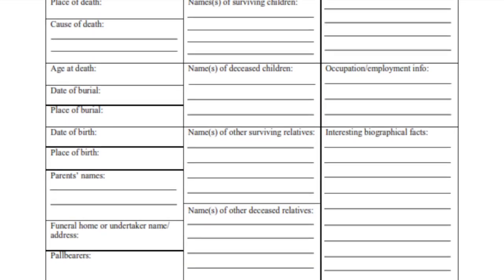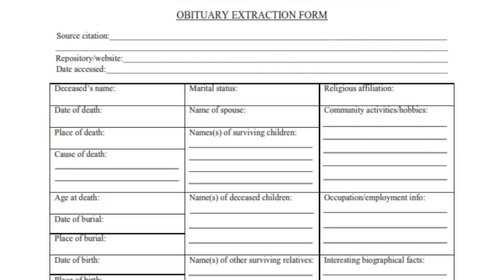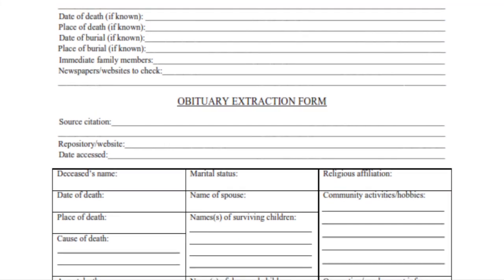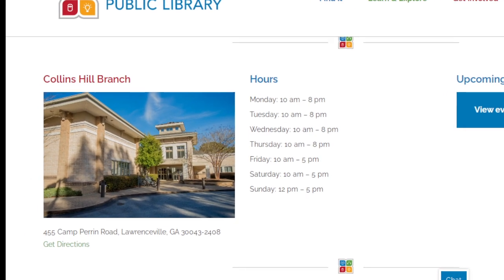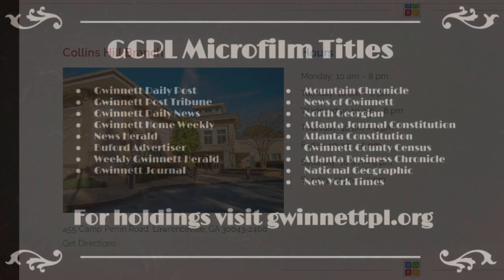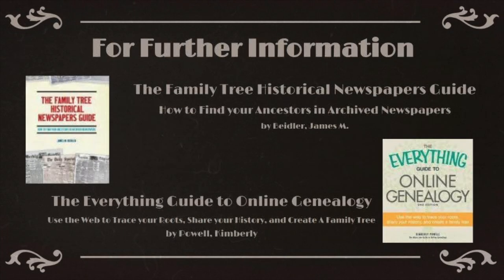So now you have some insight on how to find obituaries. Take that person you were thinking about earlier and start a little search of your own. If your family is from around the Gwinnett County area and you're looking for an obituary, stop by the Collins Hill Branch and browse through our microfilm collections of the periodicals listed here. We also take research requests online if you're not from the area. If you are looking for more information on using newspapers in your genealogical research or on genealogical research in general, come by one of the 15 branches of the Gwinnett County Public Library and check out these or a variety of other titles we have available. Thanks and happy hunting!